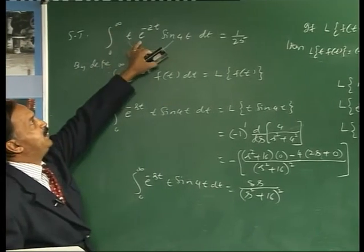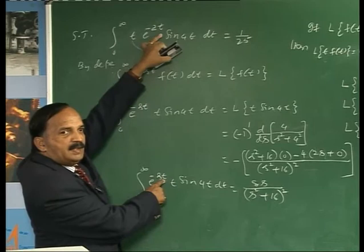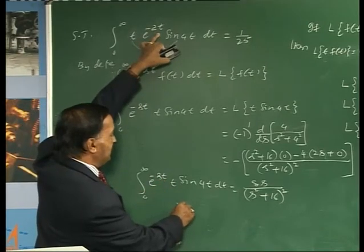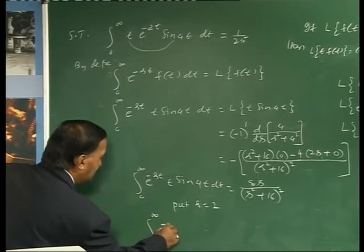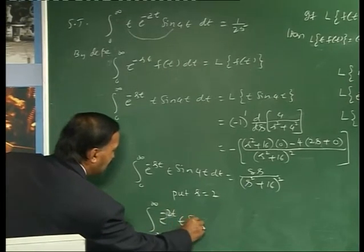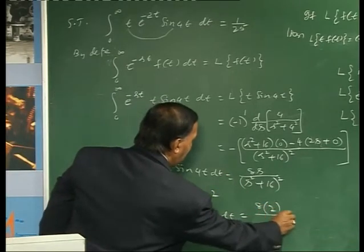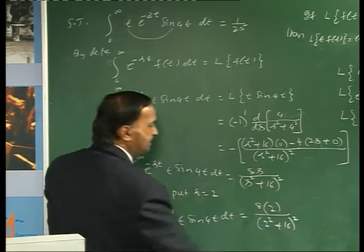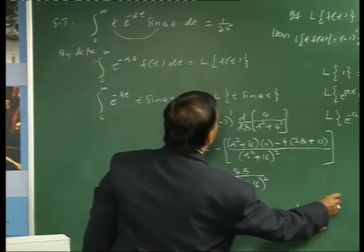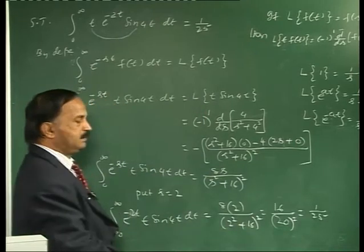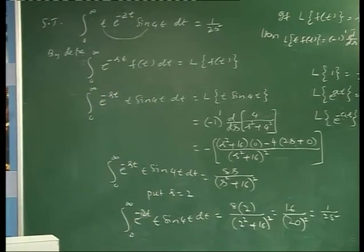We want e^{-2t}, so put s = 2. Then integral from 0 to infinity of e^{-2t}·t·sin(4t) dt = 8(2)/(2²+16)² = 16/(20)² = 16/400 = 1/25. This is the required answer.